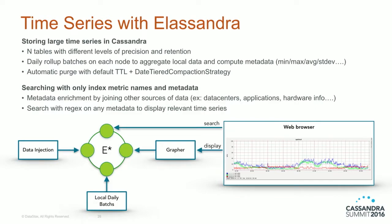We have also used Elasandra to manage time series. Time series data is stored in Cassandra, and only metadata about those time series is indexed in Elasticsearch. We were able to enrich this metadata by doing joins with many sources of data from SQL databases or other Cassandra tables. At the end we could produce graphs for, for example, all machines of the same type or all machines hosting the same application — very useful for diagnosis and capacity planning.